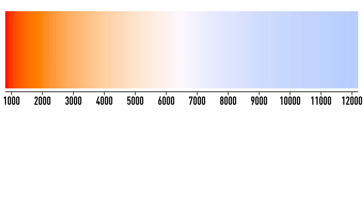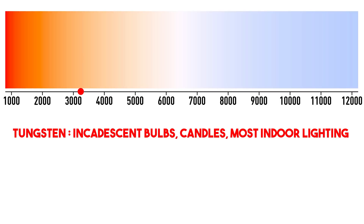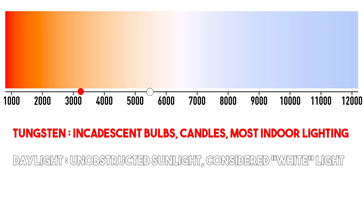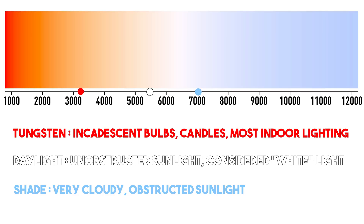Let's simplify a bit and focus on only three of the most common color temperatures in photography: tungsten, daylight, and shade. Tungsten lighting is typically around 3200 Kelvin. Daylight from the sun is typically around 5500 Kelvin. Shade starts at 7000 Kelvin but can go up much higher. With all three of these there is a range depending on conditions, but these are pretty standard numbers we consider common for those types of light.